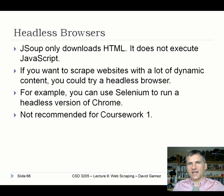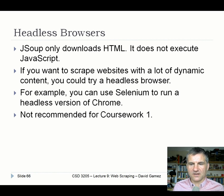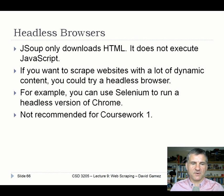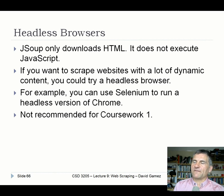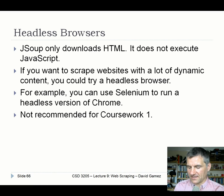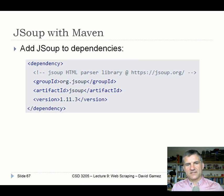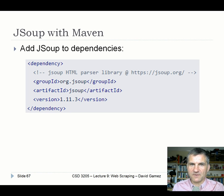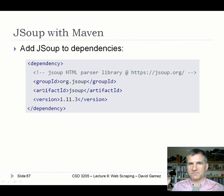JSoup only downloads HTML - it sends a GET request and gets HTML back. It's not executing any JavaScript on a page, and some pages are single-page web applications or have lots of dynamic content. If you want to scrape those pages, the final DOM only occurs after executing the JavaScript. One way to handle that is to use a headless browser like Selenium to run a headless version of Chrome. It will take more time and I wouldn't recommend it for coursework 1, but talk to me first. For Maven: it's easy to use JSoup - just include it in your pom.xml and it'll download the jar file automatically, and you get marks for using Maven.